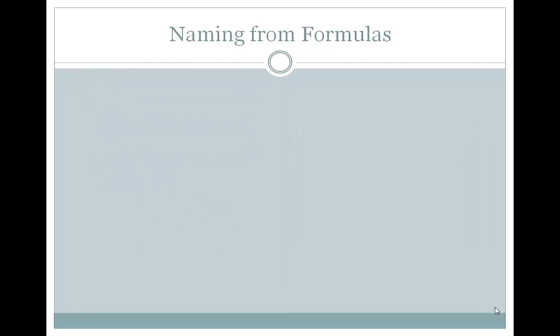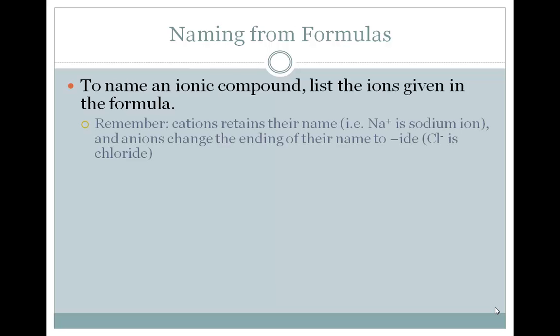First, let's look at naming when we are given a formula. To name an ionic compound, all we have to do is list the ions given in the formula.